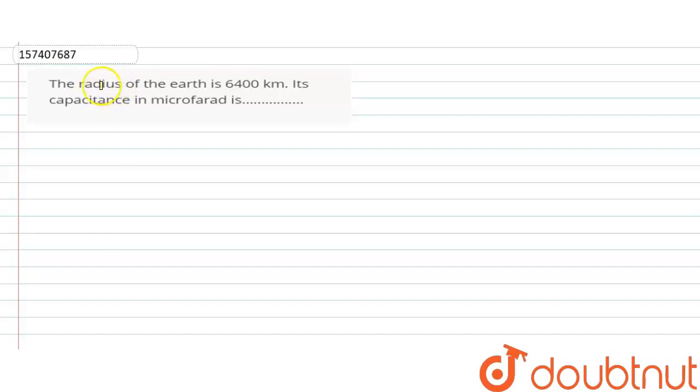The question is: the radius of Earth is 6400 km.